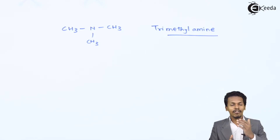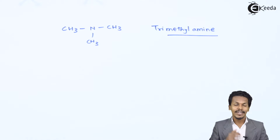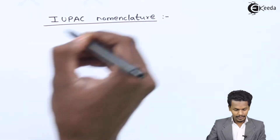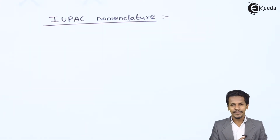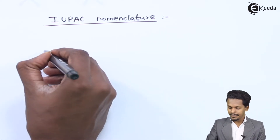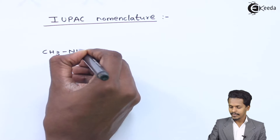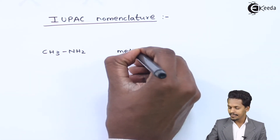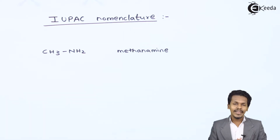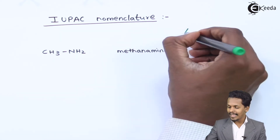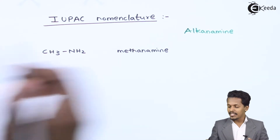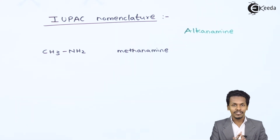So that was related to the common name. Now let me elaborate about the IUPAC nomenclature for amines. If we consider CH3NH2, this is a primary alkyl amine, and the IUPAC name is methanamine. Generally, the IUPAC nomenclature of an amine is alkane amine, where the final 'e' of alkane is replaced by amine.